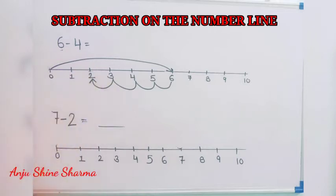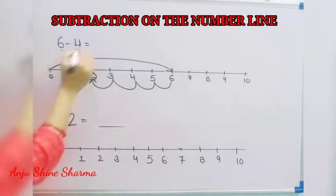The last number is 2, means at last we reach at 2. So the answer of 6 minus 4 is 2.